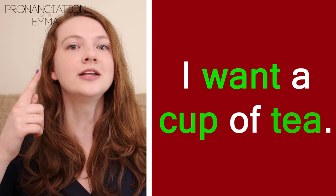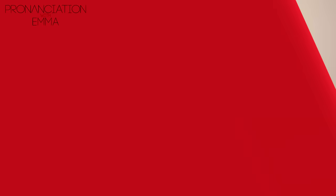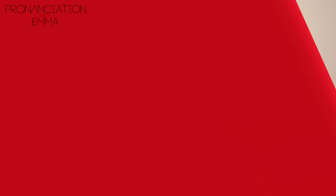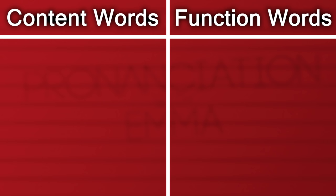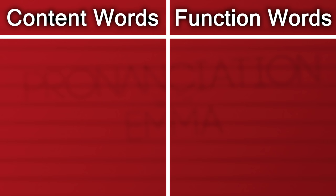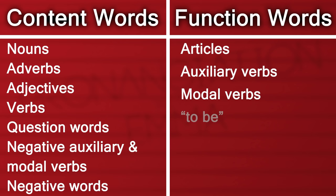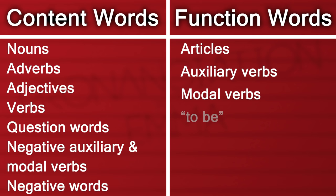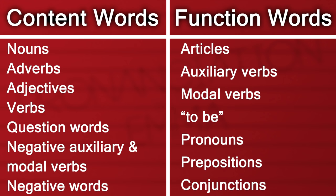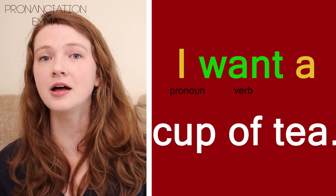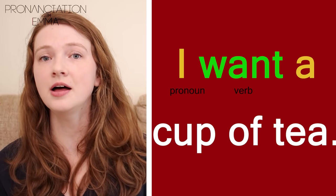I want a cup of tea. Now you're probably thinking: which words are stressed and which ones are unstressed? I have a handy table for you. We can categorize English words into two groups: content words and function words. Content words include nouns, adverbs, adjectives, verbs, question words, and negative or modal words. Function words include articles, auxiliary verbs, modal verbs, the verb 'to be', pronouns, prepositions, and conjunctions.